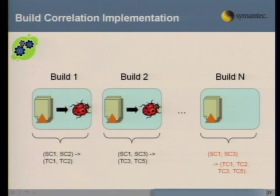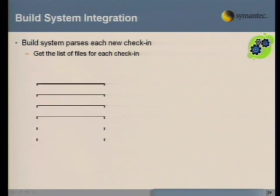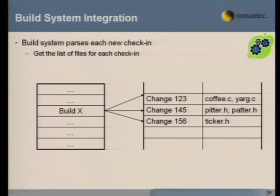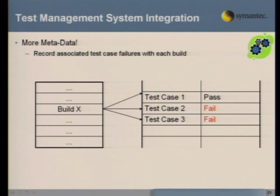For the build correlation method: integrate with your build system so that it parses each check-in and records the changes being made in a database. You can say, with build X, we have three changes and five different source code changes. Then integrate with your test case management system to get more metadata — on build X, we had these three test cases run, and two of them failed. So we can say with some certainty: these two test case failures are associated with the last set of source code changes.